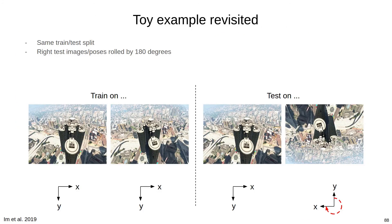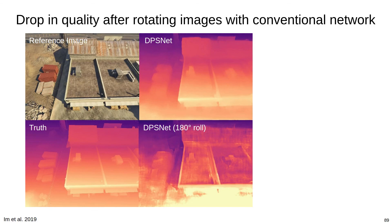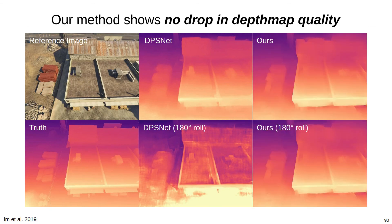We also showed the benefit of viewpoint compensation. We previously showed how a conventional network like DPSNet suffers a steep drop in depth map quality by rotating images in the test set. Here we can see how DPSNet struggles with the rotated images. Our method, however, exhibits no drop in quality after rotating the images due to the viewpoint compensation in our feature network.